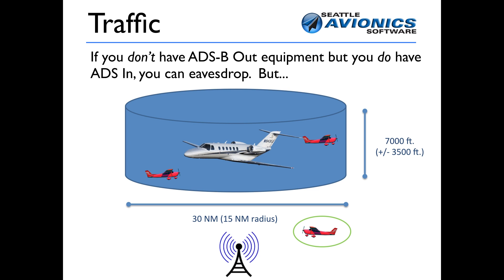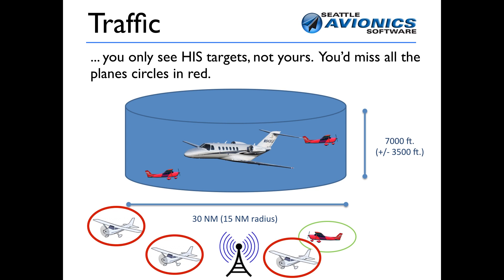On the other hand, if you're the Cessna circled in green and you don't have ADS-B out, you won't receive any traffic meant for you. But by eavesdropping, you'll receive the traffic meant for the Citation — so you'll see the two red Cessnas in the blue bubble and the Citation jet. The problem is that traffic closer to you may be too far from the Citation for the ground station to report, yet very close to you. That's the danger of not having ADS-B out: you may see some traffic, but you're not guaranteed that the traffic you see is relevant to you.